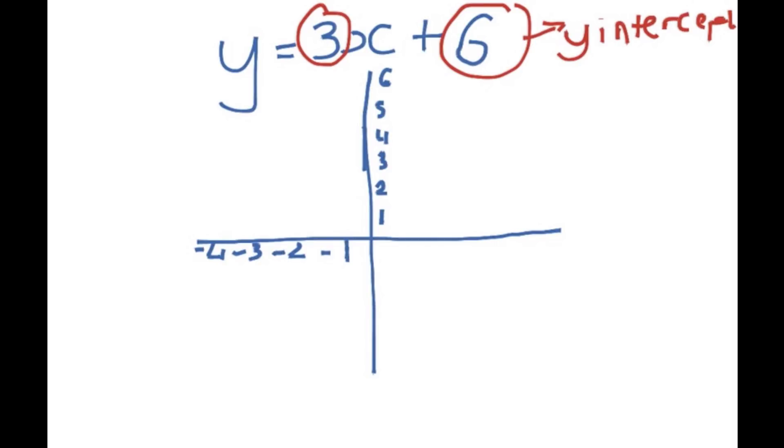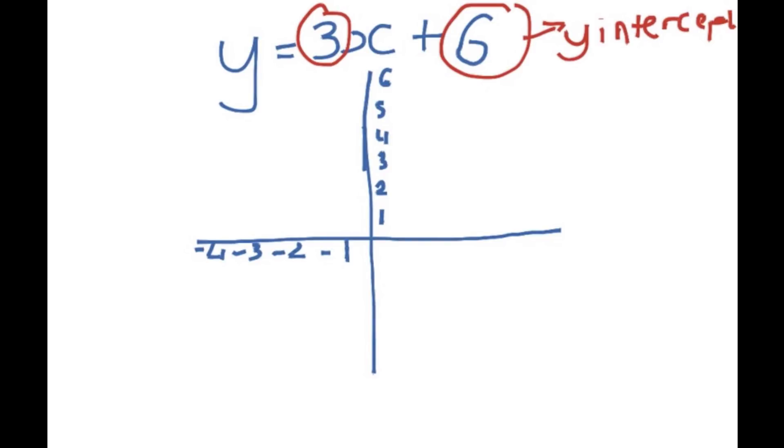First of all, it's very important you rewrite the equation as y equals 3x plus 6. And then what you want to do is you want to sub in y equals 0, because the point where the line crosses the x-axis, which is here, y will be 0.